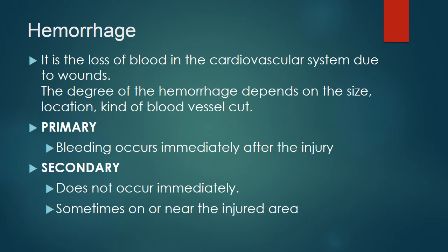Hemorrhage is the loss of blood in the cardiovascular system due to wounds. The degree of hemorrhage depends on the size, location, and kind of blood vessel cut. Primary bleeding occurs immediately after the injury; secondary bleeding does not occur immediately but sometimes occurs on or near the injured area. Too much loss of blood will cause death — blood is one of the most important components of life.